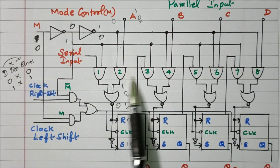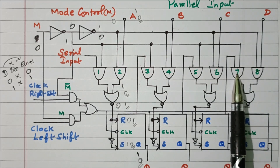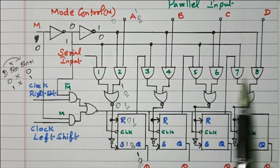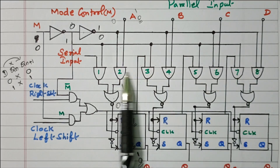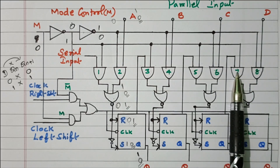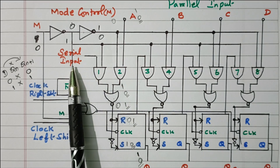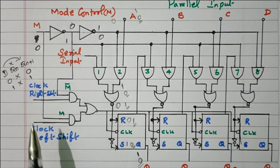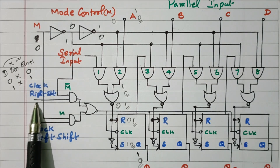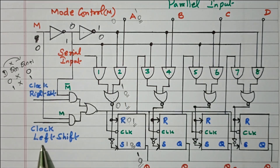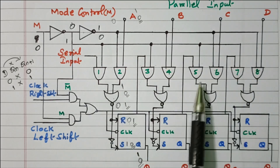The right-shift operation has been discussed. To perform the left-shift operation, the diagram needs to be modified. The serial input should be connected to the seventh AND gate, then it passes through gates 5, 3, and 1. Drawing this in the diagram would cause the lines to be confusing, so only the right-shift flow is given here. For left-shift, the same logic is repeated from the opposite side.